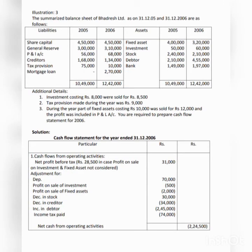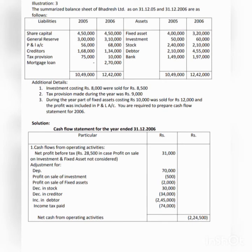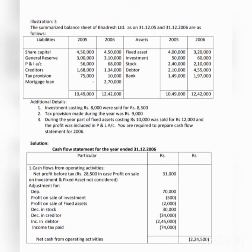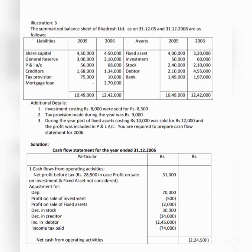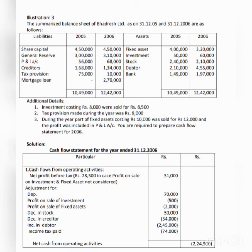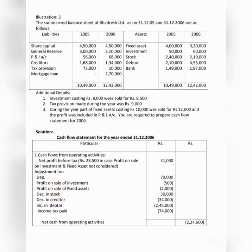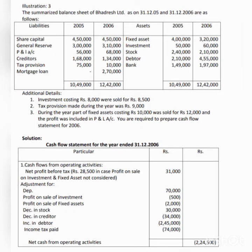The next step is to add non-cash and non-operating expenses. First, add depreciation. If there is any writing off of goodwill, patent, or copyright, add that item to the net profit. If there is any loss on sale of machinery, also add that to the net profit. Then, if there is any income or profit on sale of machinery, deduct that amount from the net figure.